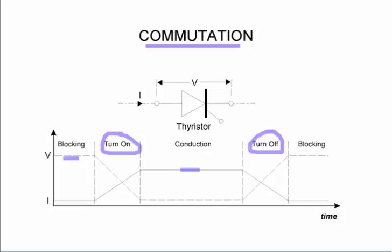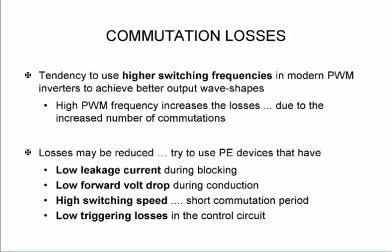During this turn on and turn off period we have a high power dissipation, which is also called the switching losses. So those switching losses will then increase if we increase the frequency, if we switch it on and off on a more regular basis. Now the tendency is to use higher switching frequency in our modern pulse width modulation inverters in order to achieve better wave shapes.